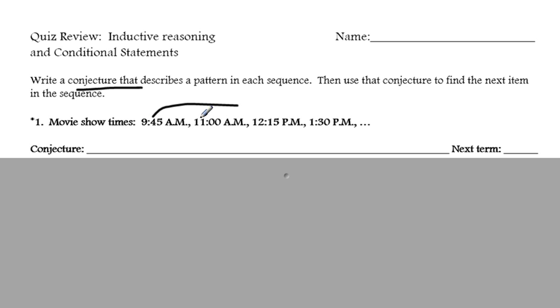So, if you can notice, to get from 9:45 to 11, we'd have to add an hour and 15 minutes. I'm just going to write it as 1:15. To get from 11 to 12:15, we have to add an hour and 15 minutes, and to get from 12:15 to 1:30, we have to add an hour and 15 minutes.